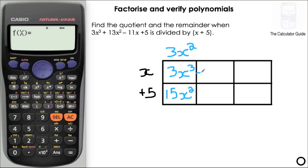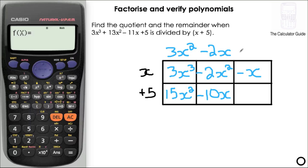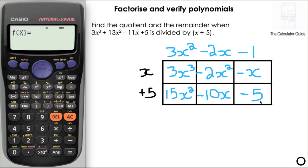Comparing 15x squared to the 13x squared in the polynomial, I need to take 2x squared away. What do I need to multiply x by to give minus 2x squared? That's minus 2x. Minus 2x times 5 gives minus 10x. Comparing that to minus 11x in the polynomial, I need to take away one more x, so minus x. What do I need to multiply x by to give minus x? That's minus 1. Minus 1 times 5 gives minus 5. Comparing that to the last term, which is plus 5 — they're not the same, so I need a remainder of plus 10 to go from minus 5 to plus 5. My remainder is 10.